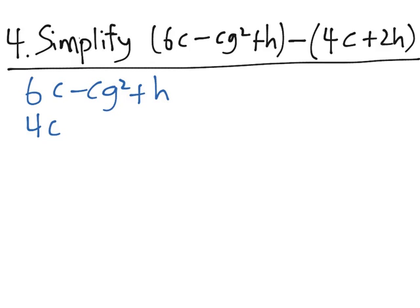The first polynomial is 6c minus cg squared plus h. Now the second polynomial has 4c, which aligns with 6c, and 2h, which goes with h.